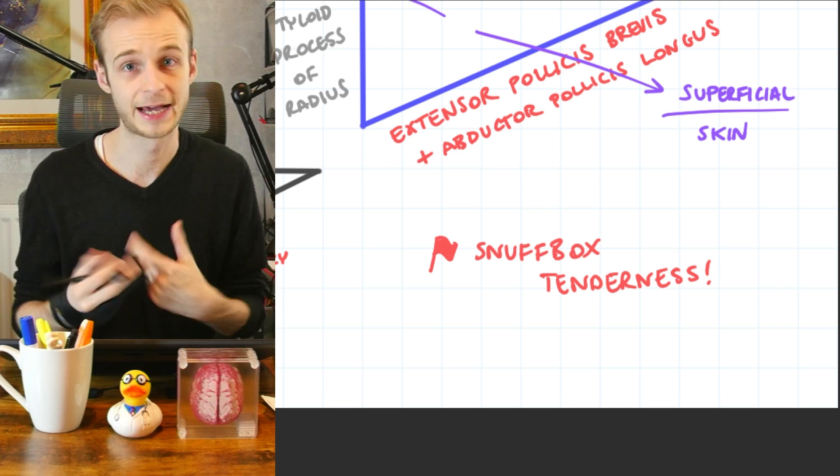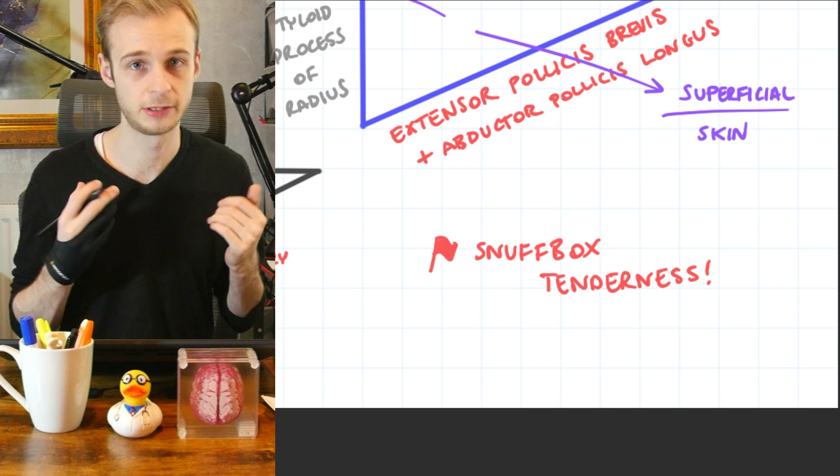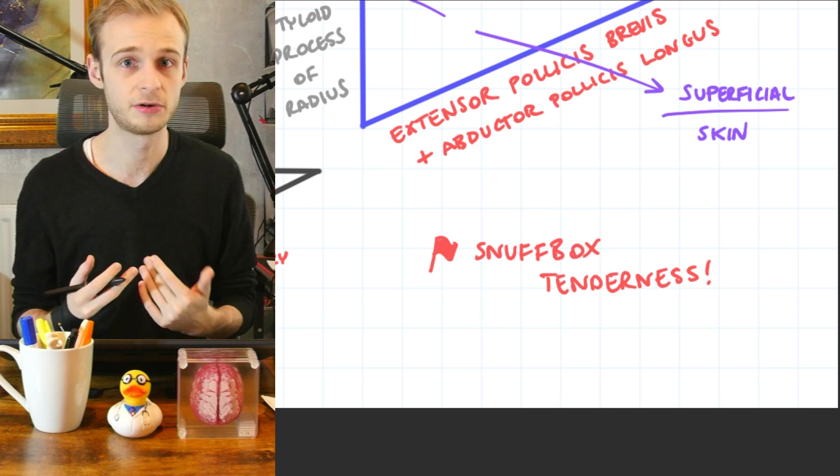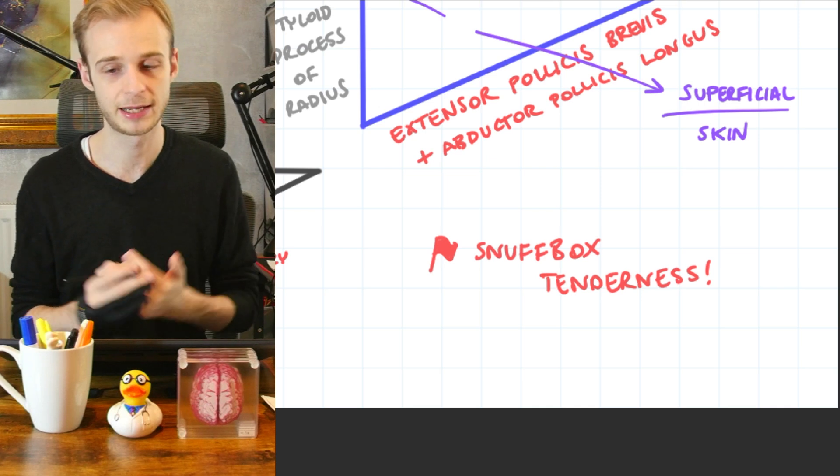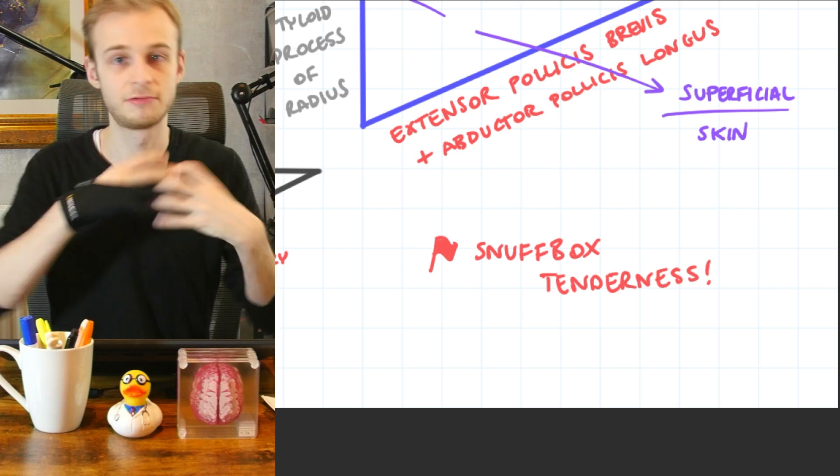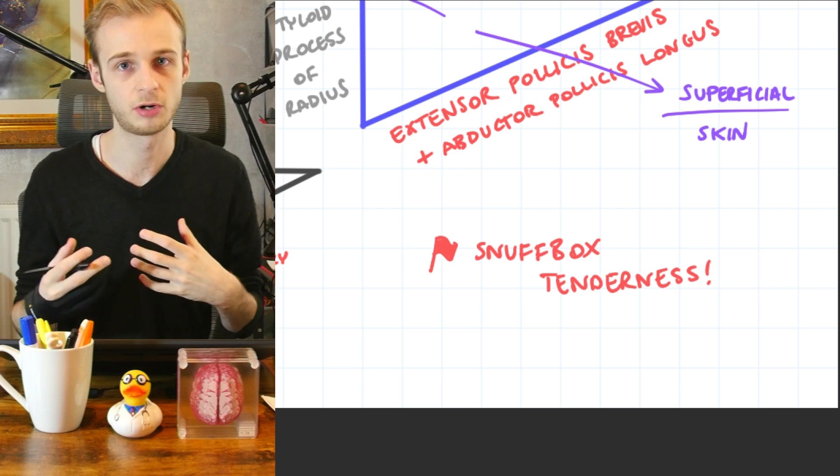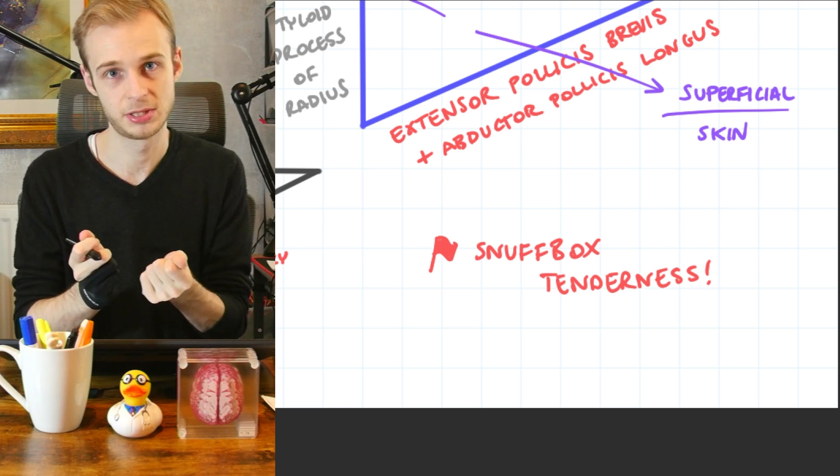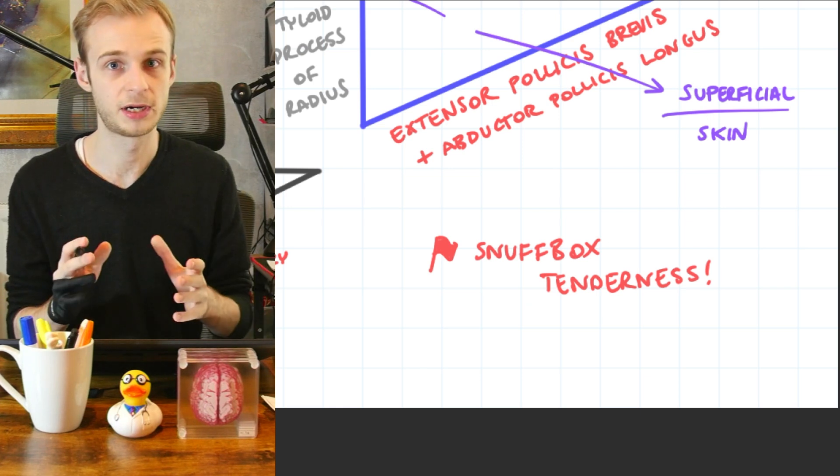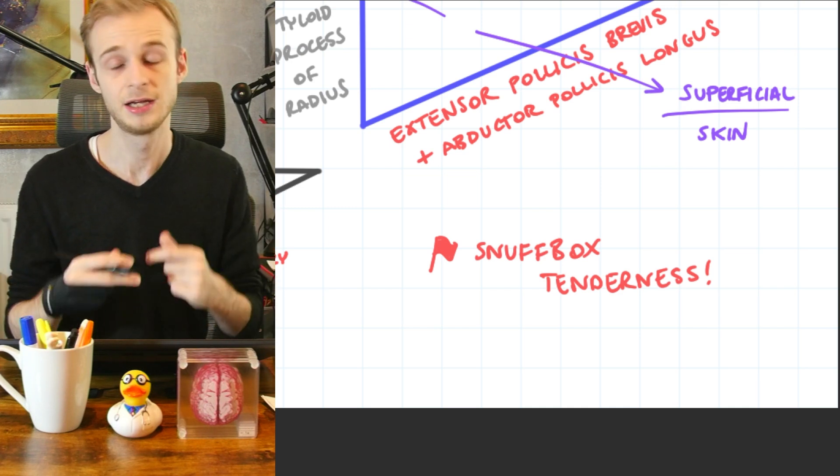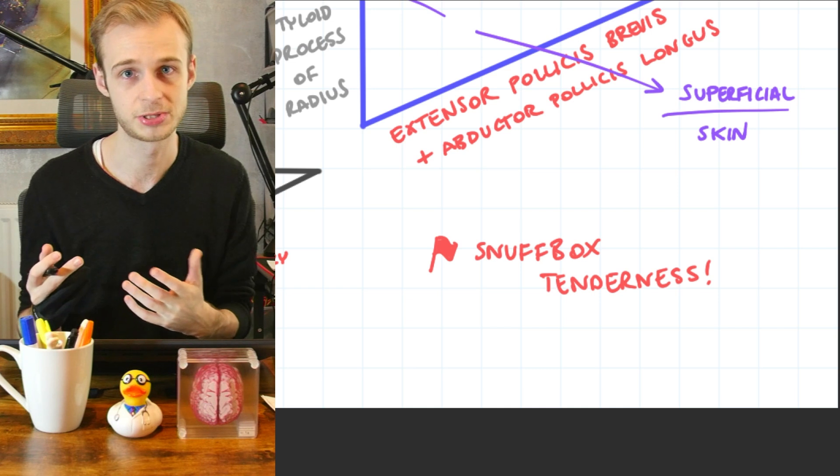Again, go and have a look at my hands of the bone and wrist video if you want to learn more about the carpal bones. But the long and short of it is that the scaphoid bone has a retrograde blood supply. That is to say that the blood supply starts distally and comes proximally rather than the other way around, which is more common. So if you have a fracture, it can cause disruption to that blood supply and cause the proximal part of the bone, which has no blood supply of its own, to become avascular and undergo avascular necrosis, which will cause tenderness and pain.